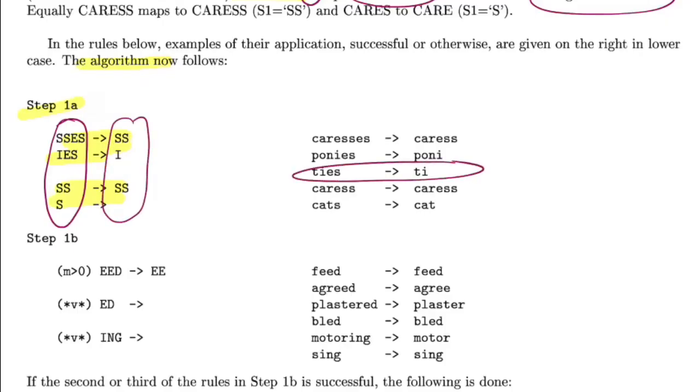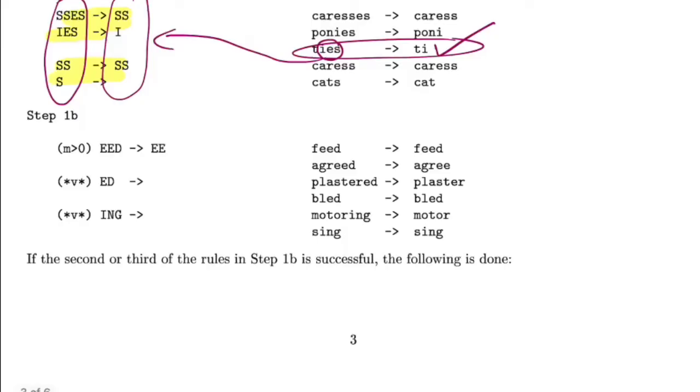If you have any of these prefixes, you map to their respective characters. For example, with the word ties, you have IES as the prefix that maps to the character I, giving you TI. Step 1b basically adds another condition that is more of a regular expression format. Somewhere you have the measure of the word, then any character followed by vowels, then any character ending with ED.